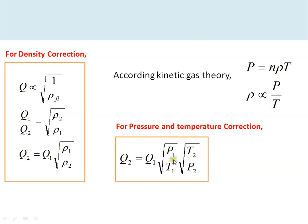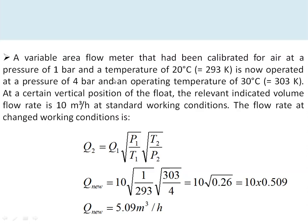To correct for both pressure and temperature variations, we use the kinetic gas theory, which states that pressure P is proportional to the number of molecules times density times temperature, giving density ∝ P/T. Substituting into the flow equation gives a corrected flow rate that accounts for variable pressure and temperature. As an example: a variable area flow meter calibrated at 1 bar and 20°C (293 K) is now used at 4 bar and 30°C (303 K).